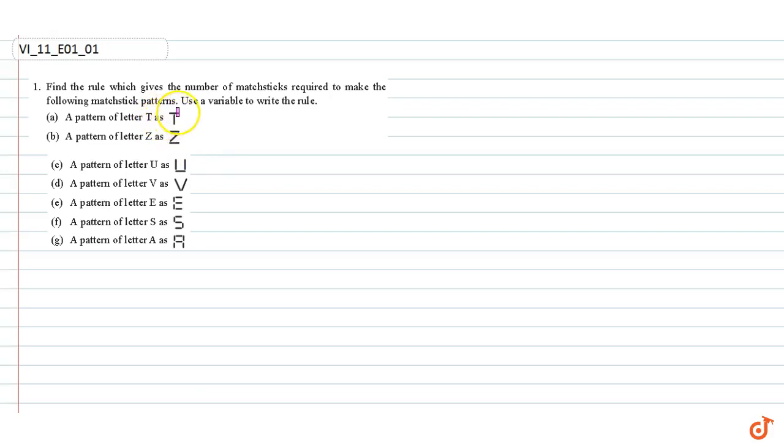In this question, we have to find the rule which gives the number of matchsticks required to make the following matchstick patterns. Use a variable to write the rule. Part A: pattern of letter T. We use n as the variable to write the rule.